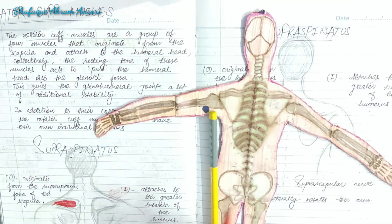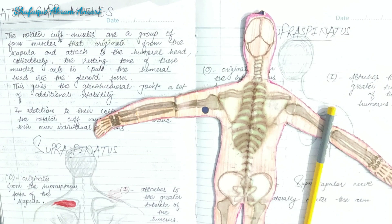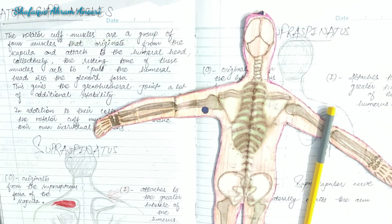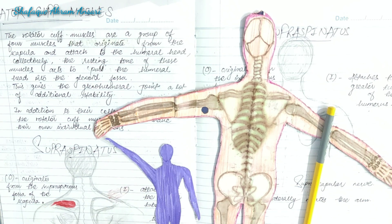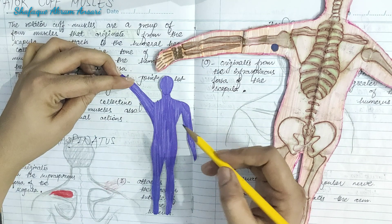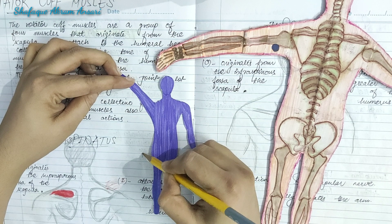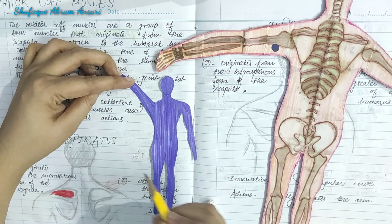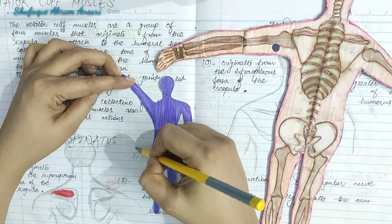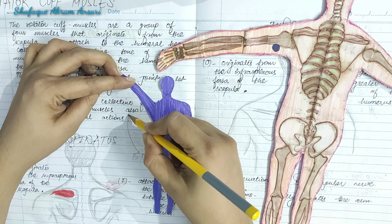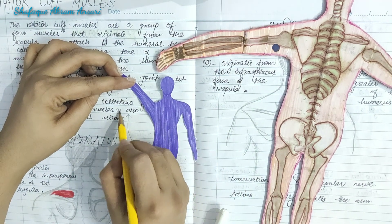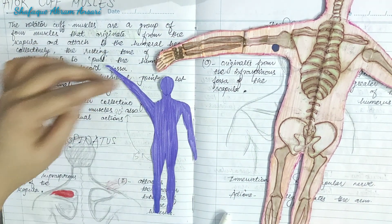Its innervation is the suprascapular nerve. Its action is to abduct the arm — the supraspinatus abducts the arm for the first 15 degrees and assists the deltoid up to 90 degrees.